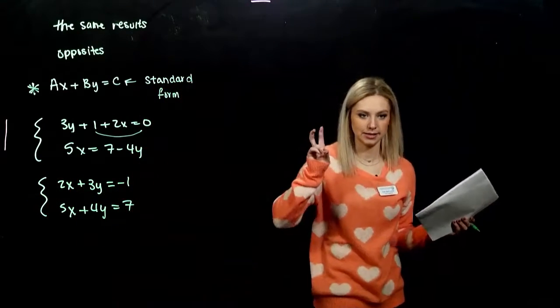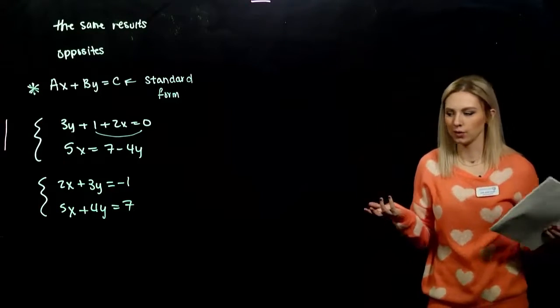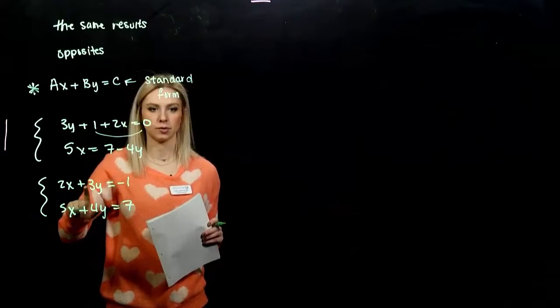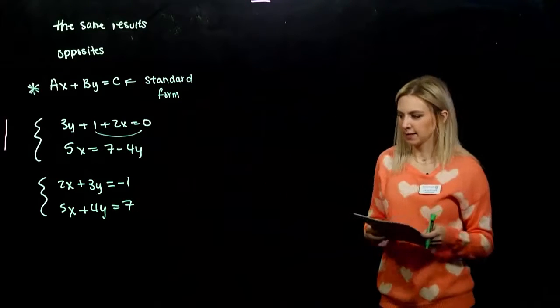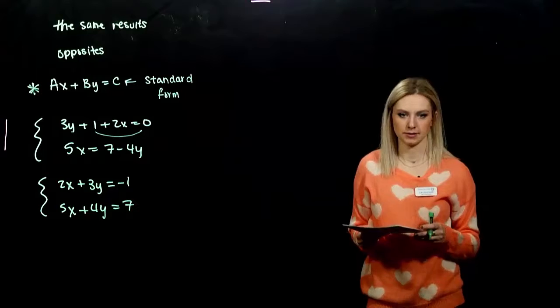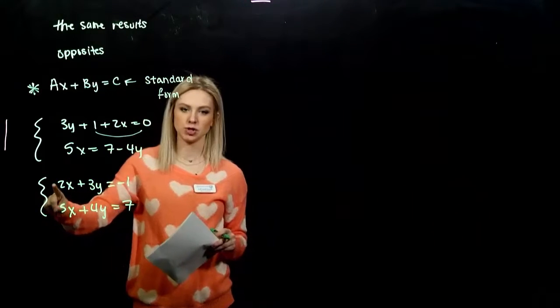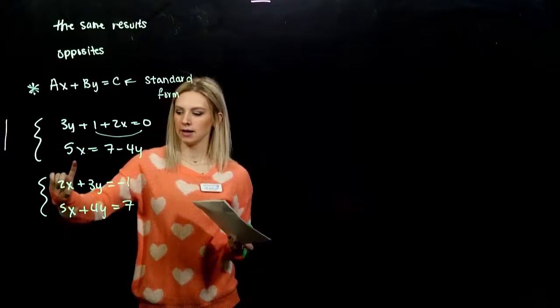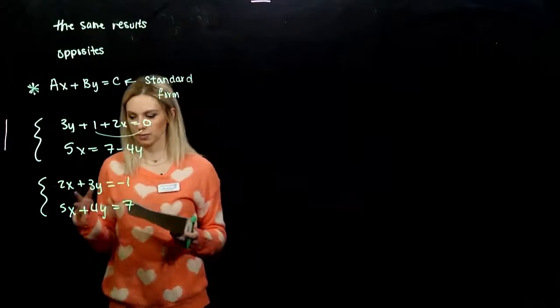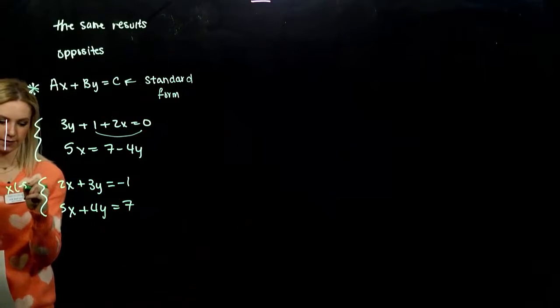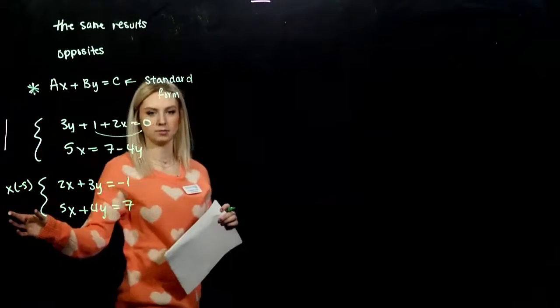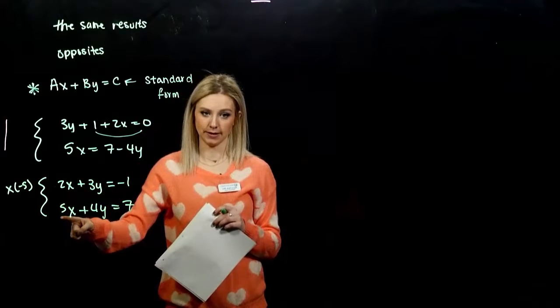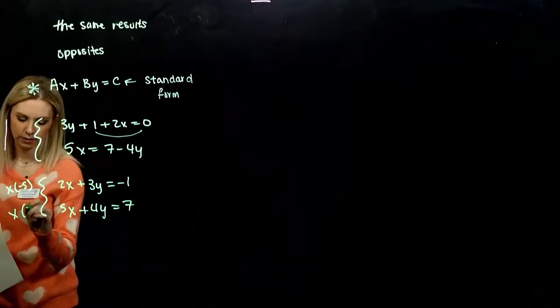So, as we're looking, is there any easiest variable to eliminate? No, the LCD for both, LCM, least common multiple between 2 and 5 is 10, between 3 and 4 is 12. So, we would have to alter both equations at the same time. So, let's just say I want to get rid of X. So, again, least common multiple between 2 and 5, smallest thing we can work with, is 10. So, I need to have opposite signs, and still have the same coefficient, just again with opposite signs. So, if I multiply that first equation by a factor of negative 5, what do I need to multiply the second line by? Factor of 2. So, this is going to be negative 10, and I need this to be the opposite of negative 10. So, we need to multiply the second one by a factor of 2.